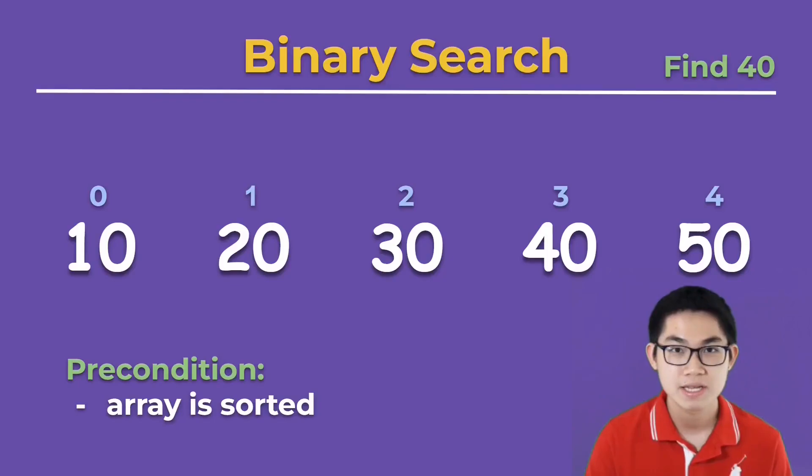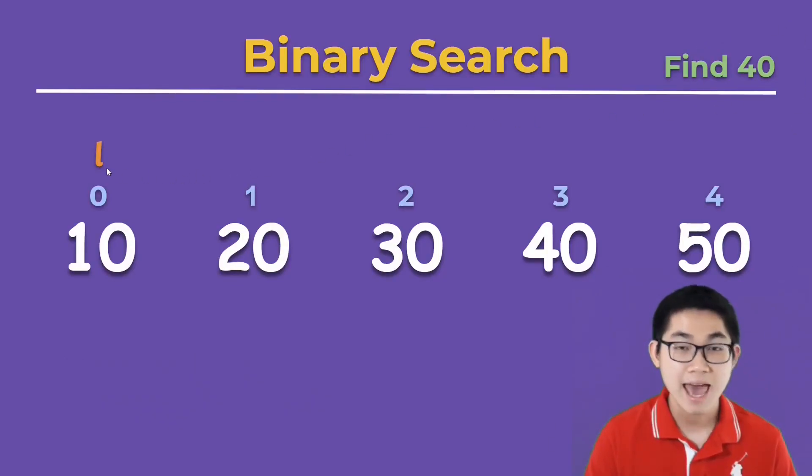Let's try to find number 40 inside this array. We put L or the left at the beginning of the array, and we put R or the right at the end of the array. The second step is to calculate the mid. The formula for mid is L plus R divided by 2. L is 0 at index 0, R is 4, and then we get 4 divided by 2, which gives you 2.